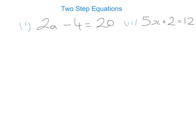I would always recommend getting rid of the minus 4 first. Ask yourself: how do I get rid of minus 4? The opposite of minusing 4 is adding 4. So we start by adding 4 to both sides. On the left-hand side they cancel out, and we bring down 2a. Then we do 20 plus 4, which gives me 24. Next, the 2 is multiplying the a, so the opposite of multiplying by 2 is dividing by 2. We divide both sides by 2: that gives 1a, and 24 divided by 2 gives 12.